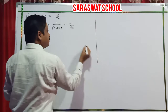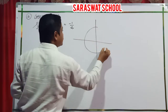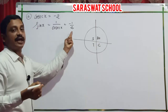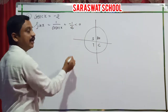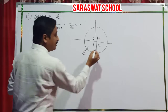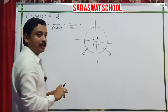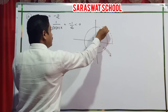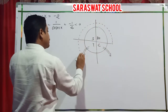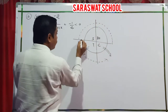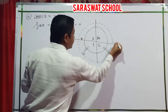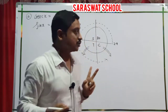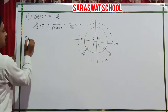Using the ASTC diagram: sine is negative in the third and fourth quadrants. I rotate anticlockwise. For the principal solution, in the third quadrant: pi plus pi by 6; in the fourth quadrant: 2 pi minus pi by 6. Sine x equals minus half, so I write down the formula.